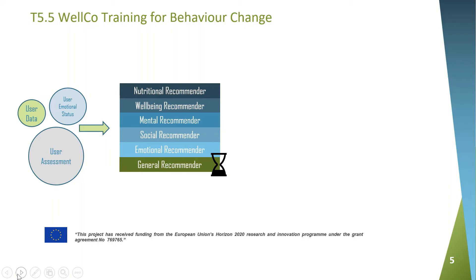WellCo depends on these recommenders: the nutritional recommender that provides information about food intake; the well-being recommender to allow the user to stay healthy; the mental recommender that takes into consideration the stress, anxiety and depression level of the user and tries to modify behaviors in this area; the social recommender that recommends people similar to the user; the emotional recommender that provides general recommendations to change the user's mood; and finally the general recommender with daily life recommendations.